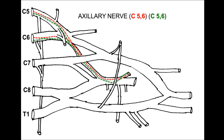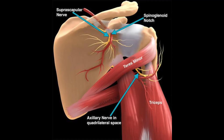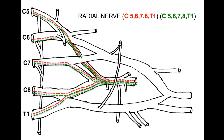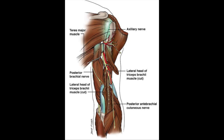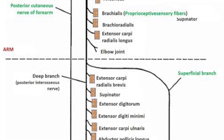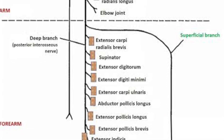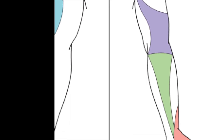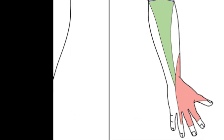The axillary nerve has both sensory and motor fibers from C5 and C6. Its sensory supply is over the lower deltoid region — the 'regimental patch.' Motor supply is to the deltoid (shoulder abduction) and teres minor (stabilizes and externally rotates the shoulder). The radial nerve, the other terminal branch of the posterior cord, receives fibers from all roots of the brachial plexus. Its motor supply is to the posterior compartment of the arm (mainly triceps) and the entirety of the posterior compartment of the forearm — extensors of the wrist, fingers, and thumb. Sensory supply covers the posterior arm, posterior forearm, lateral two-thirds of the dorsum of the hand, and the proximal dorsal aspect of the lateral three and a half fingers.